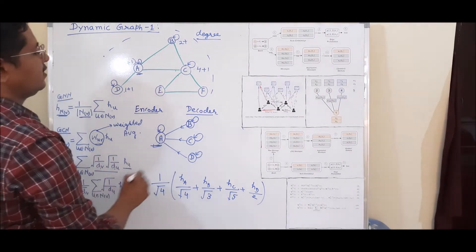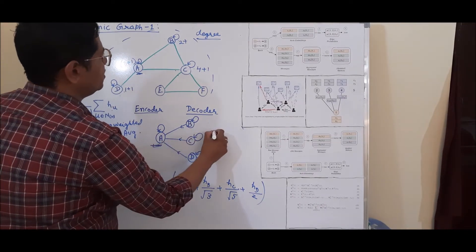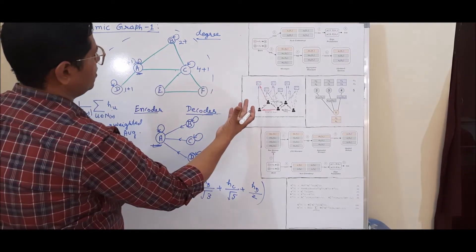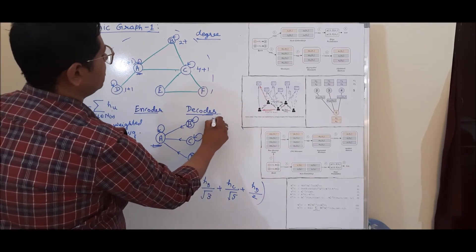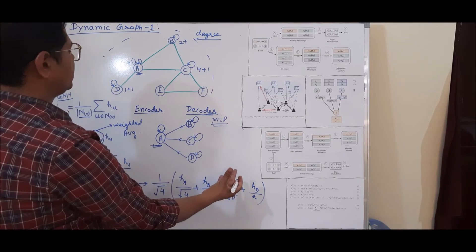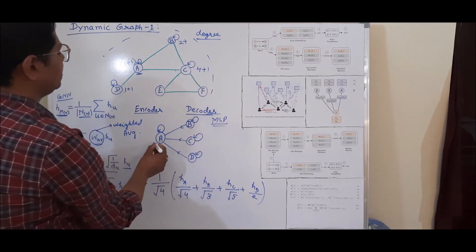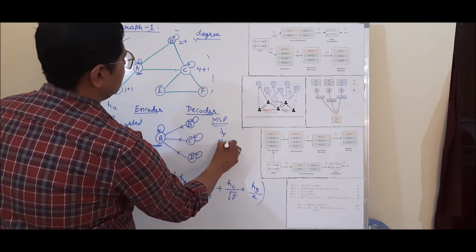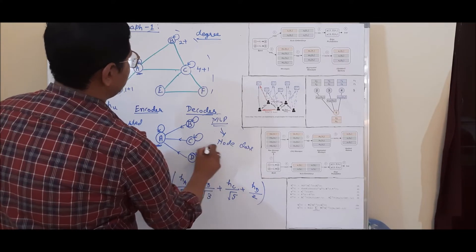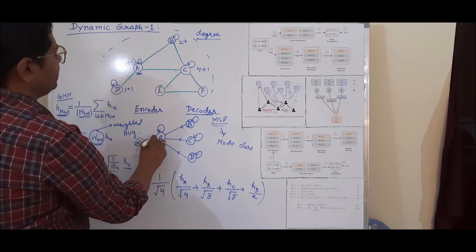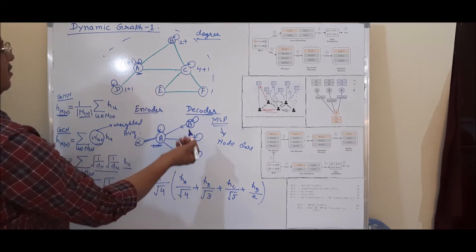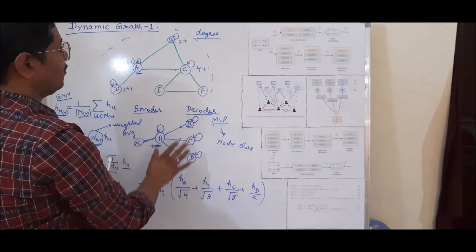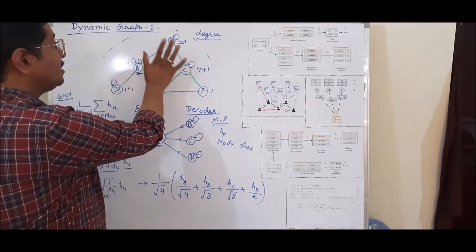Once we get the embedding value for node A, we apply a decoder — which may be a multi-layer perceptron or simple deep learning architecture — to get node classification, or link predictions such as whether node X may join node A with a link, or other graph representation outputs. This is the basics for a simple graph without any features.